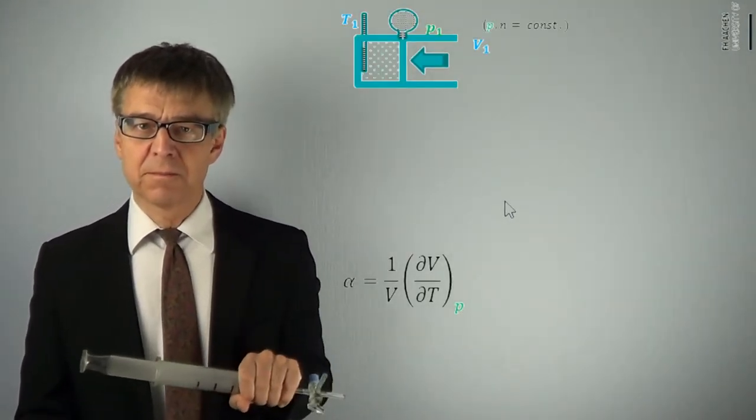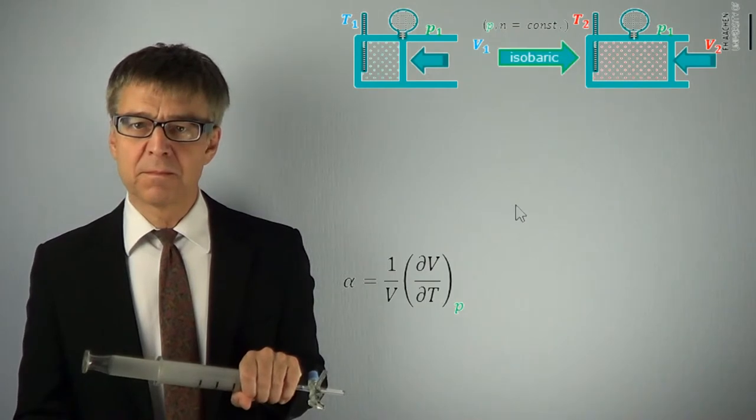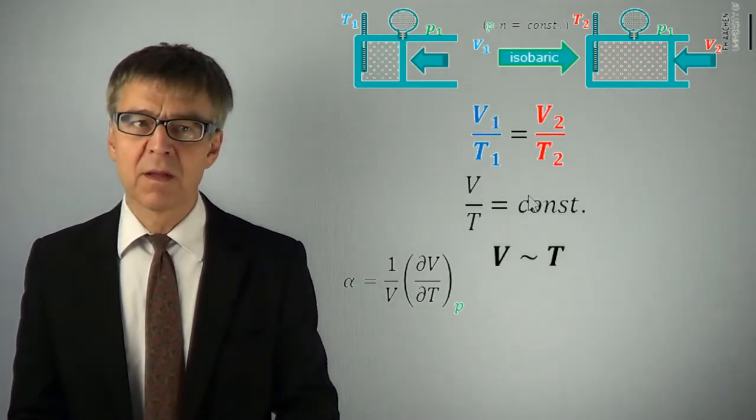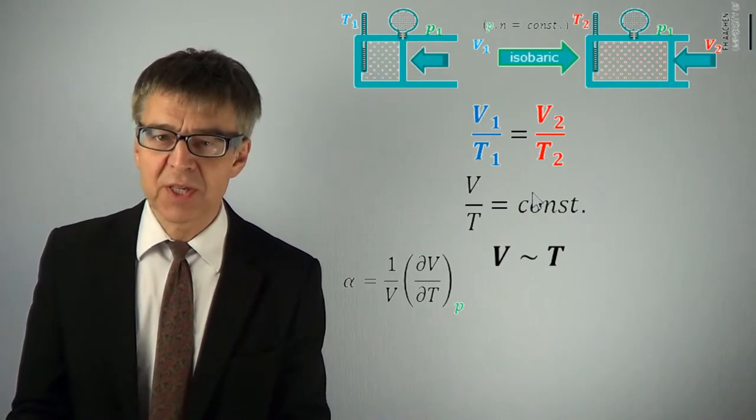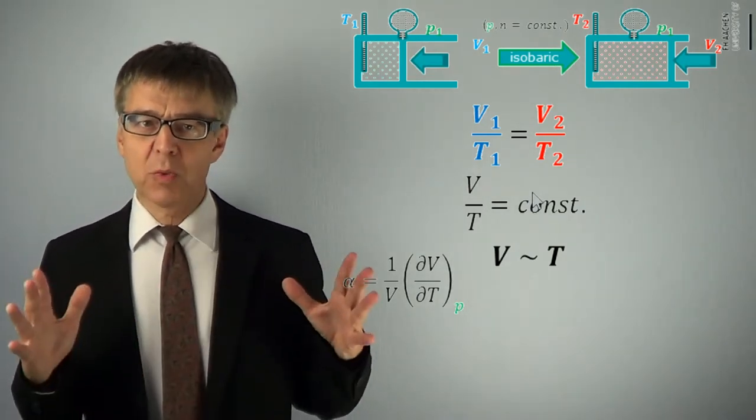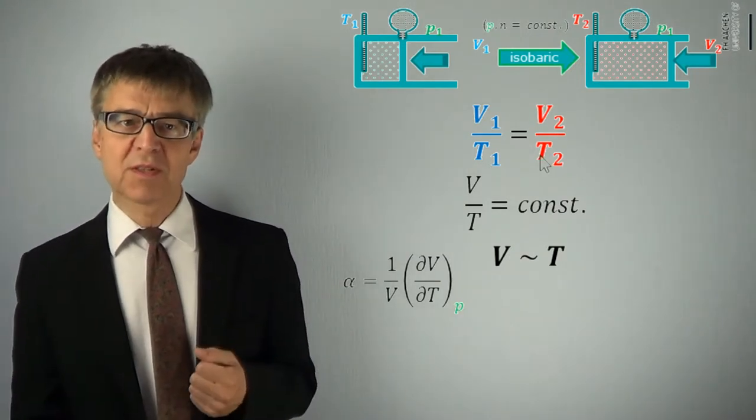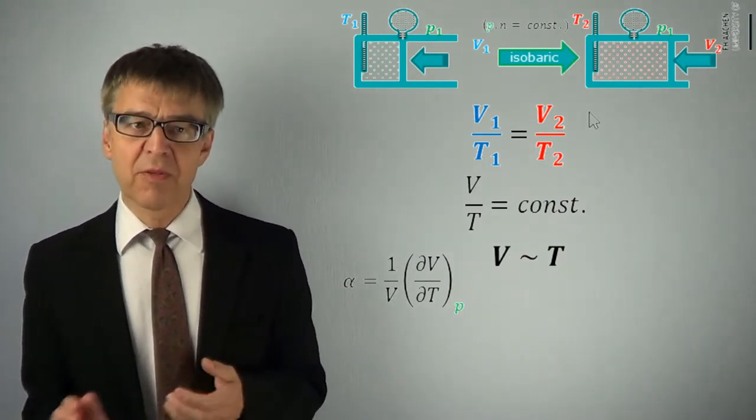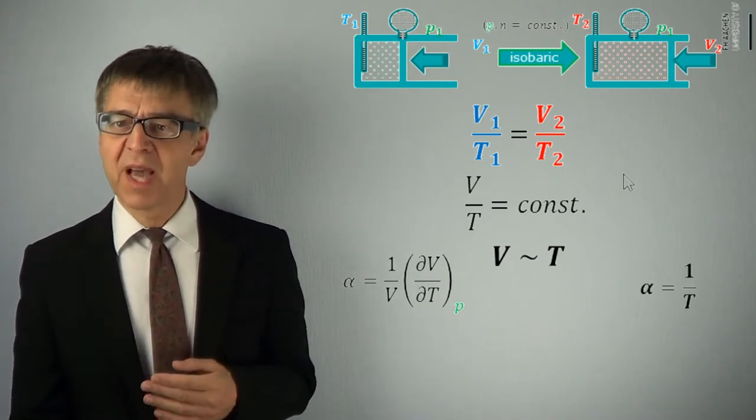If we examine the thermal expansion coefficient alpha of a gas, we come to the laws of Charles and Gay-Lussac. If we keep pressure constant and change temperature, the volume will be proportional to temperature. We observe similar behavior for changing the pressure at constant volume. So, V over T is constant and the thermal expansion coefficient alpha can be calculated.